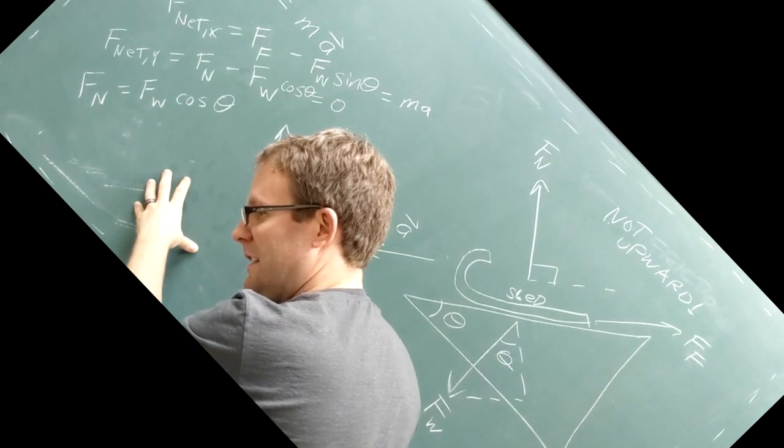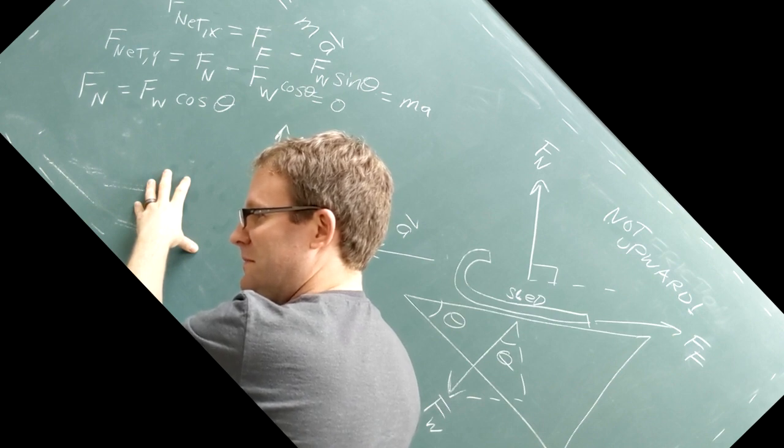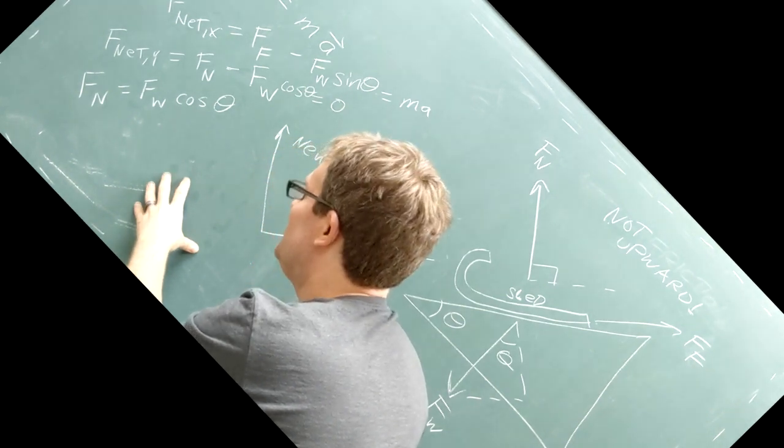Well, here's a prime example of when normal force is not equal to the weight. The normal force here equals the weight times the cosine of the slope's angle.